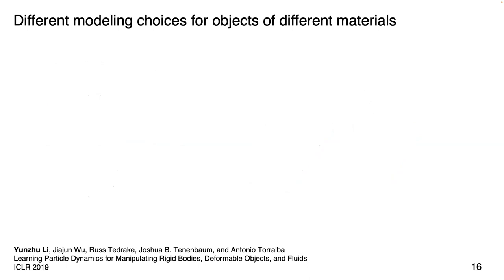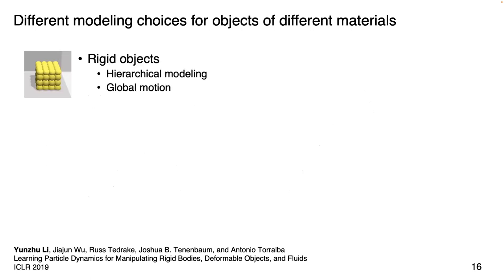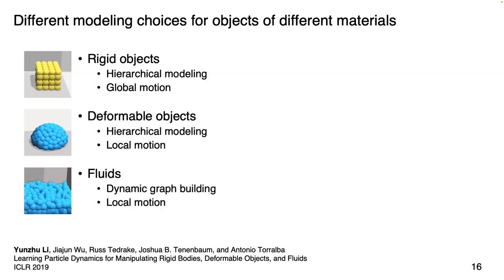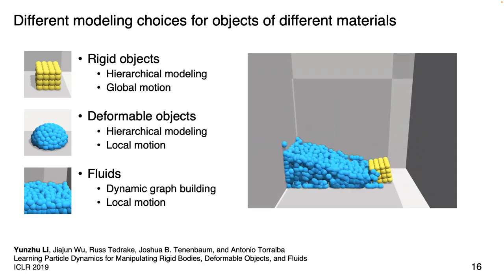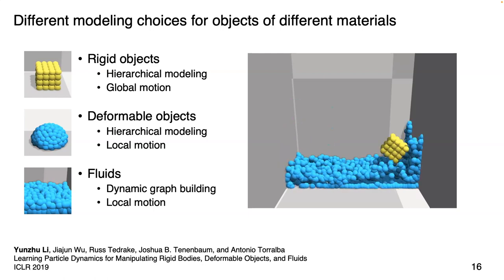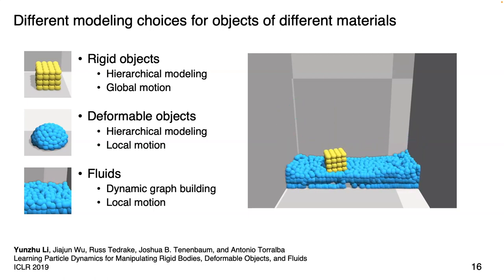For rigid objects, we use hierarchical modeling and predict a global motion for the entire object, then back-project movements to each particle. For deformable objects, we use hierarchical modeling where each particle's motion is predicted individually to model deformation. For fluids, we use dynamic graph building where each particle connects only to nearby particles, and each fluid particle has its own individual motion. Our model can predict the long-term future and correctly capture the dynamics of fluid and the interactions between fluid and rigid objects.